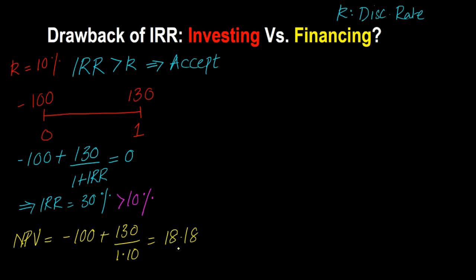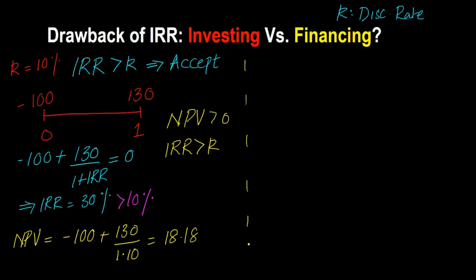The NPV is coming out to be greater than 0, so the NPV rule also says yes, go ahead and invest. Here NPV is greater than 0 and the IRR is greater than the discount rate. Both NPV and IRR are telling you the same thing — they are consistent with each other in the sense that both say to accept this project: NPV > 0 and IRR > discount rate.